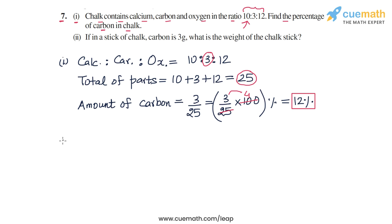Now let's do part 2. Part 2 says if in a stick of chalk carbon is 3 grams, what is the weight of the chalk stick? We know that carbon makes up 12% of chalk—we just calculated it in the first part—and using this we have to find that if in a stick of chalk the amount of carbon is 3 grams...